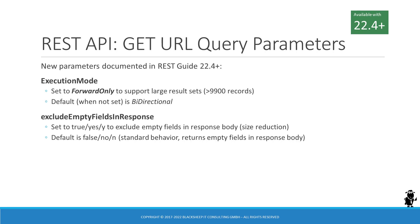The result can only be navigated from the first to the last record. The second parameter is named exclude empty fields in response, and when set to a positive value — true, yes, or Y — will cause the response body to exclude empty fields. This has an overall positive effect on the size of the result set, which is a performance benefit.